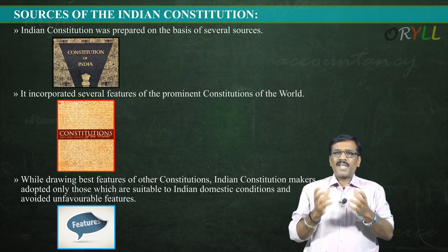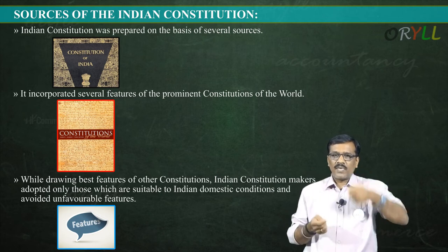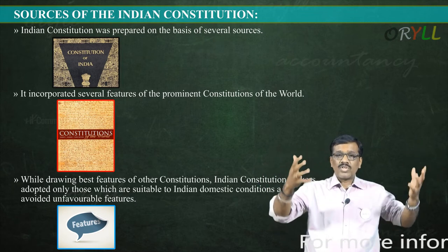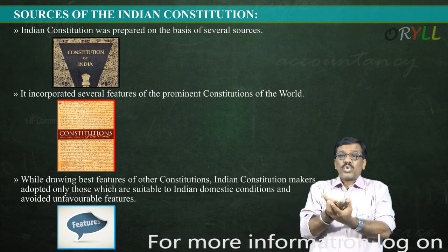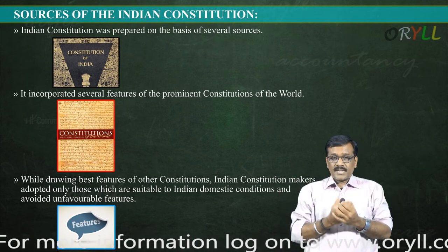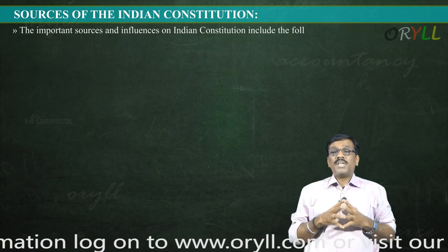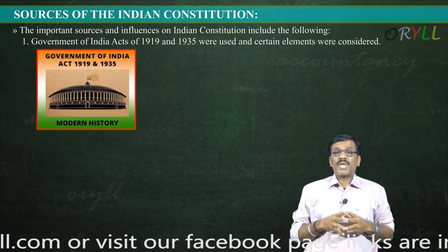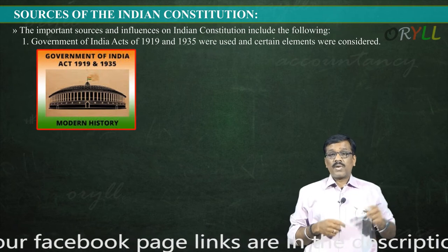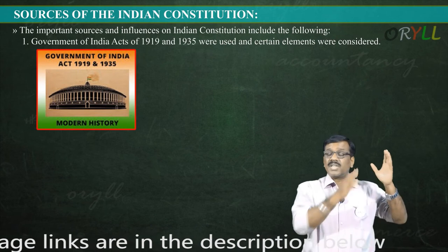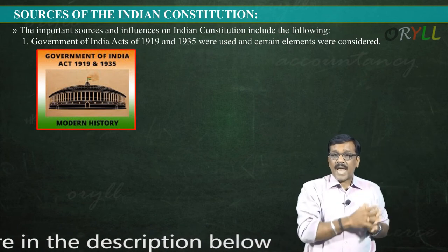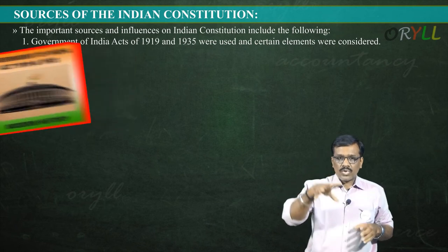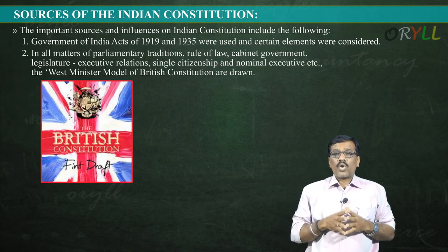Just like a filter is used to filter tea leaves, the constitution makers filtered provisions from different constitutions to suit our culture and country. The Government of India Acts of 1919 and 1935 were used, and certain elements were taken directly from them. In matters of parliamentary traditions, rule of law, cabinet government, and legislative-executive relations, we followed the Westminster model of the British Constitution.